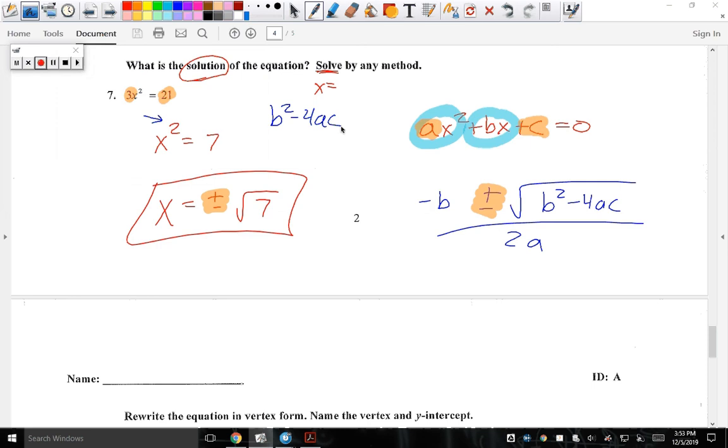If I looked at this, you tell me. What's b? Zero. What's a? Three. Careful. What would c be? Negative 21. So if I do b squared minus 4 a c,